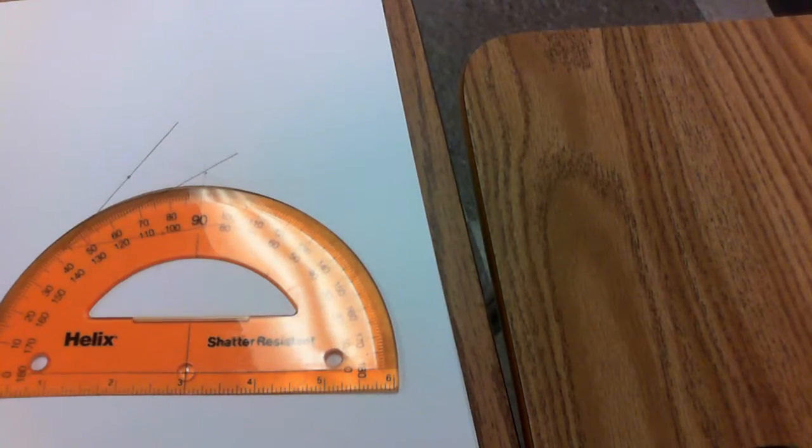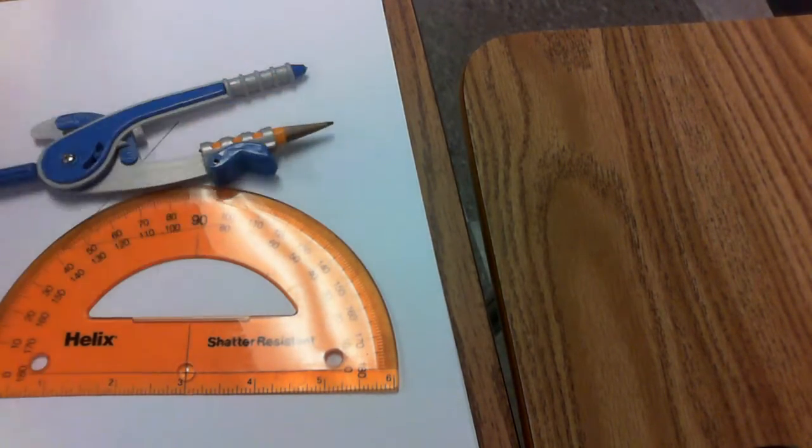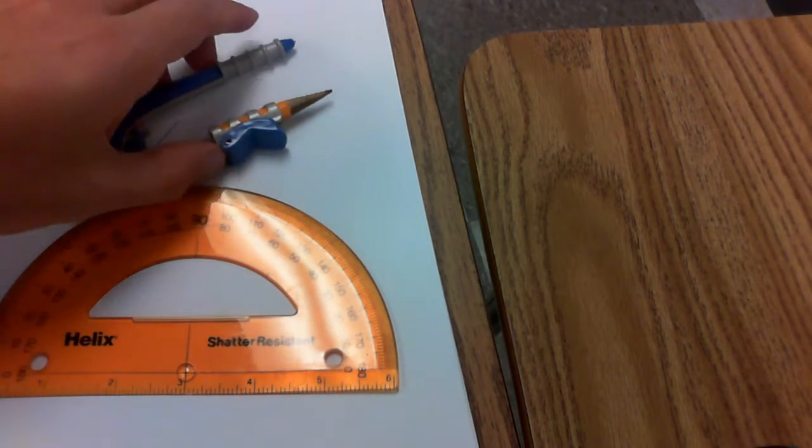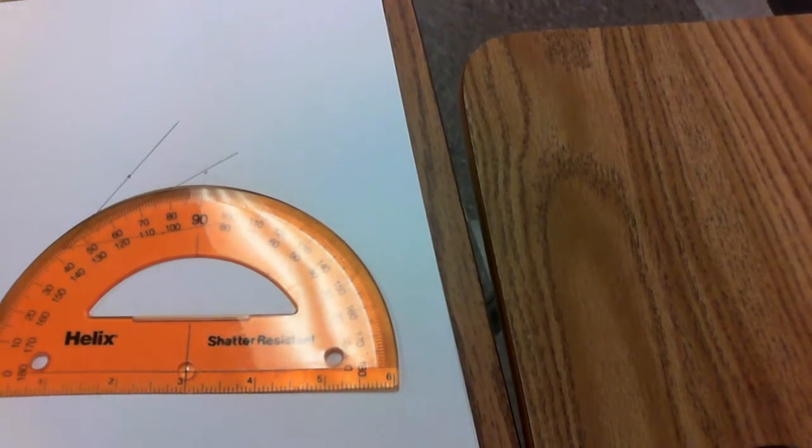So this piece is the protractor, not to be confused with this piece that is the compass. A protractor we use to measure angles.